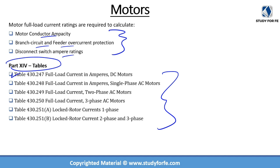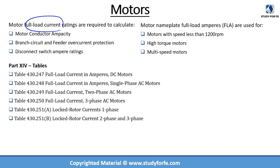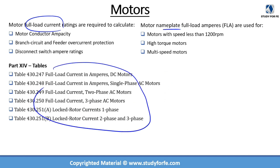Part XIV contains these important tables: Table 430.247 deals with FLC for DC motors; 430.248 deals with single-phase AC motors; 430.249 deals with two-phase AC motors; and probably the most important, 430.250, deals with three-phase AC motors, which are quite commonly used. There are some unique cases where we use the nameplate full-load amps instead — specifically for motors with RPMs less than 1200, high-torque motors, and multi-speed motors. But for all practical cases, your FLC will come from Part XIV tables, depending on the type of motor you're using.